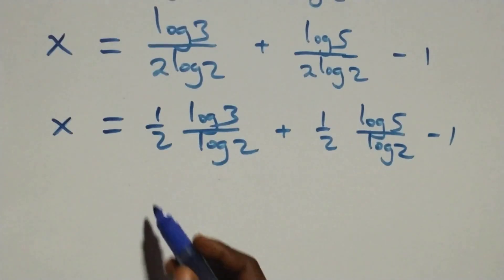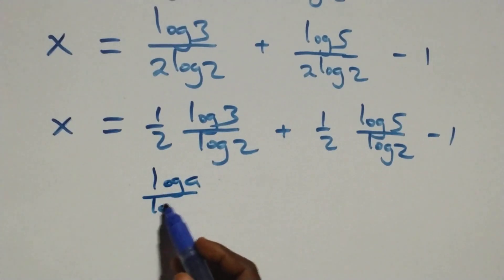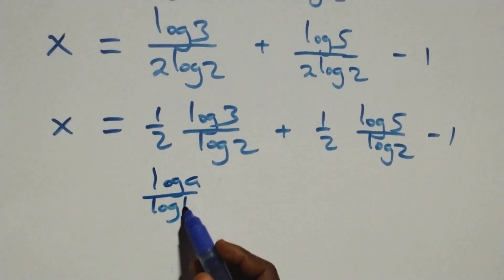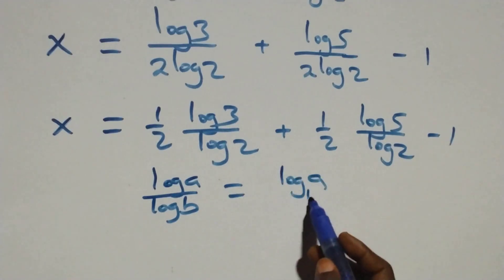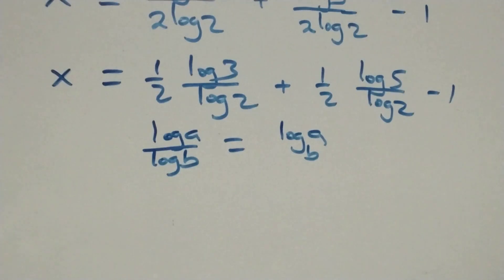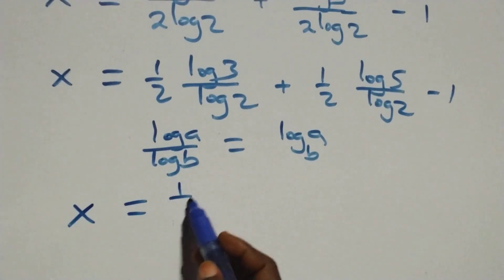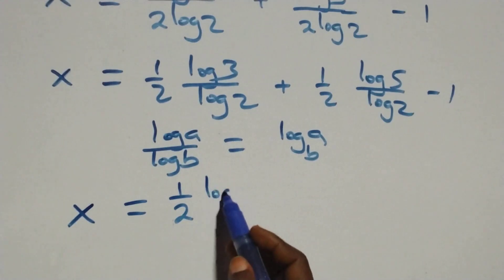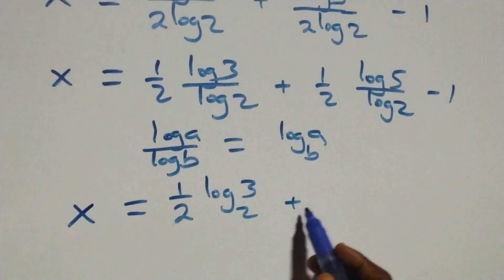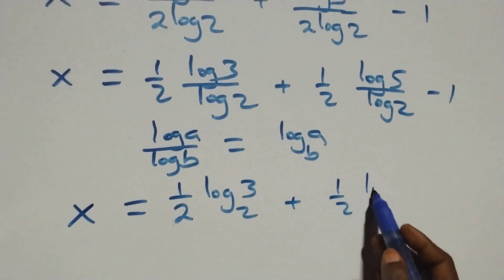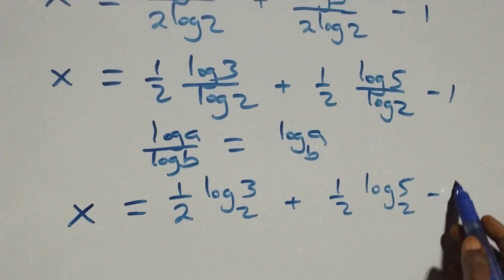Here we apply the change of base formula. We have log a over log b, which is the same thing as log a to base b. So what we have becomes x equals one-half times log₂3 plus one-half times log₂5 minus 1.